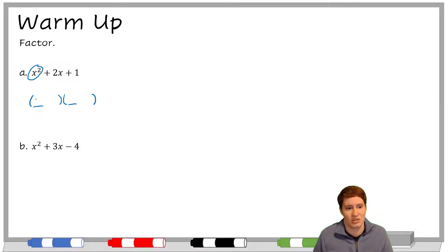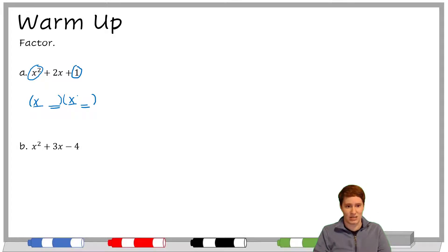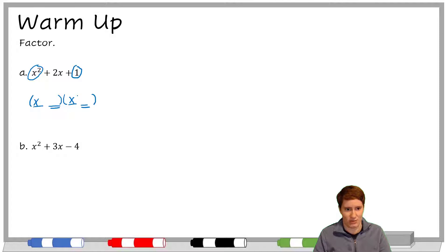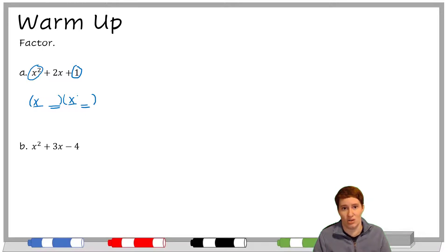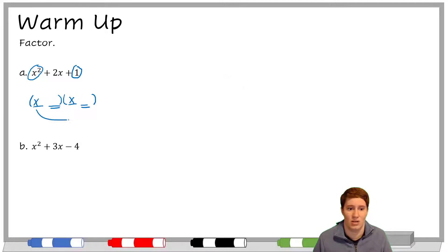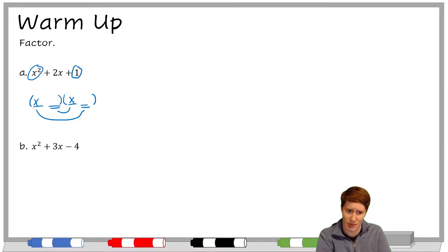So x squared splits up into x and x. Then we look at the last term and say it needs to go here and here — we need two things that multiply together to get positive 1. Most of the time, there's more than one option for what multiplies to get that third term. We want to pick the things where the outer and inner terms add together to give us 2x. The only options for positive 1 are 1×1 and -1×-1. We want 1×1 because those add to get 2.